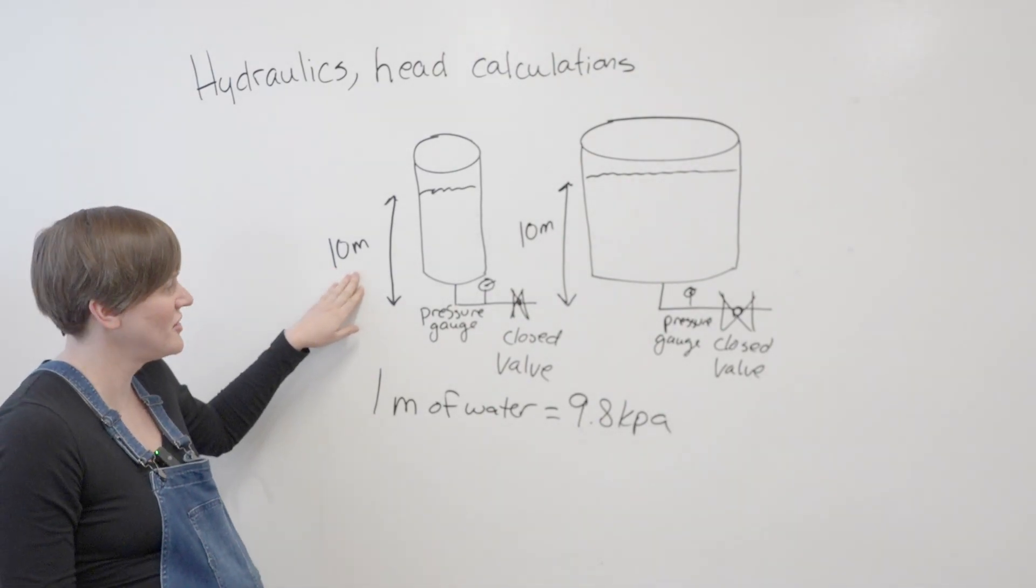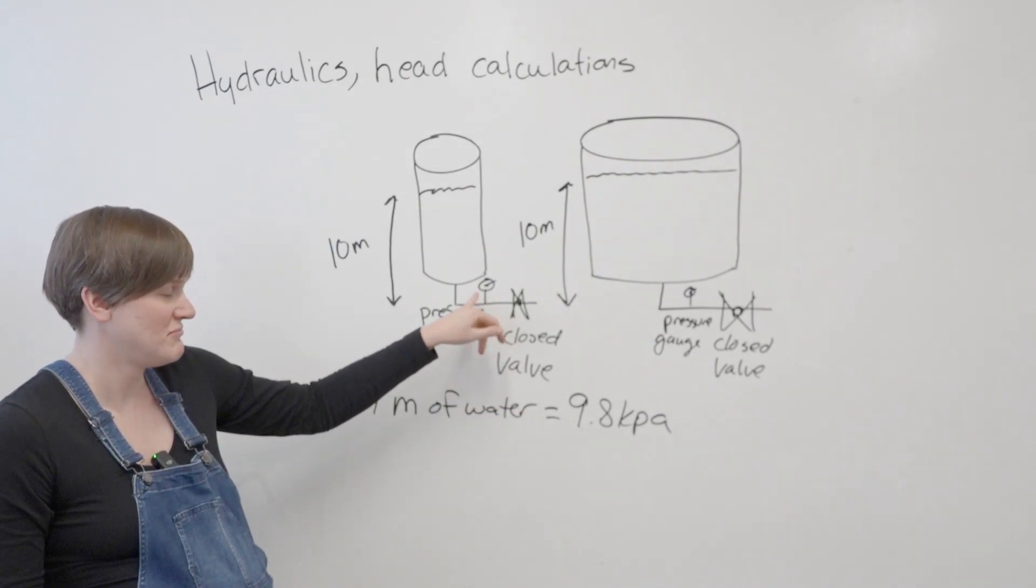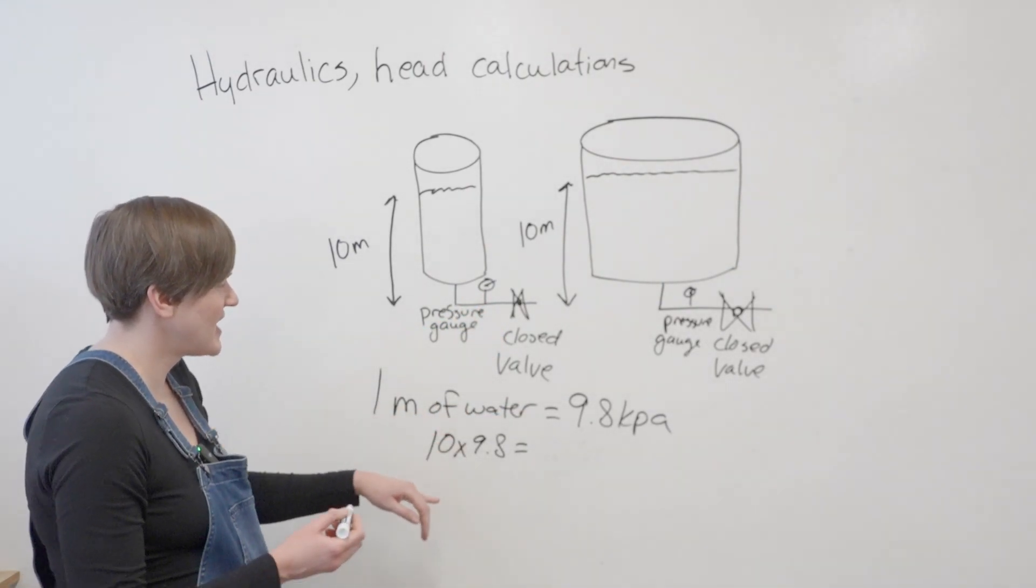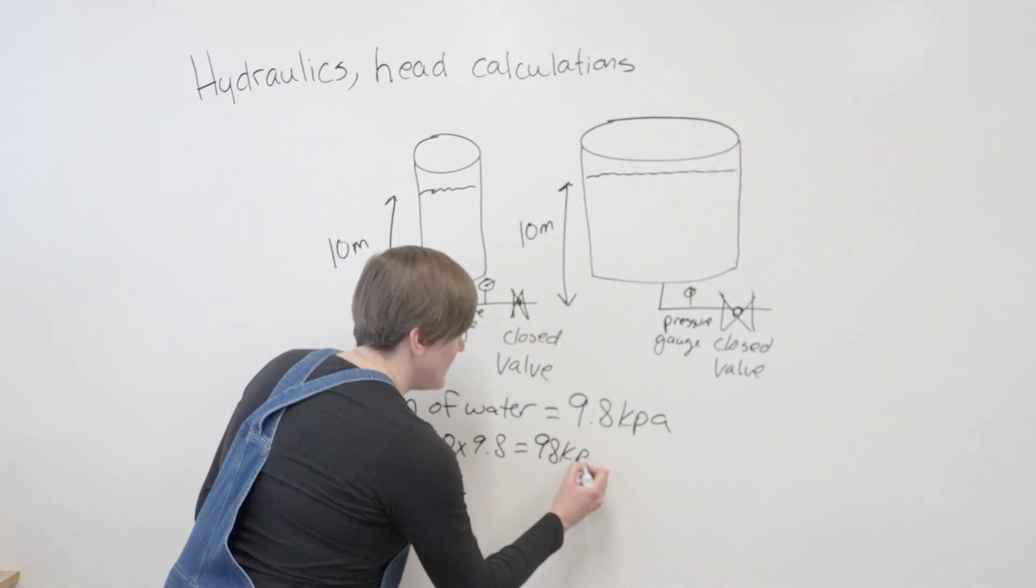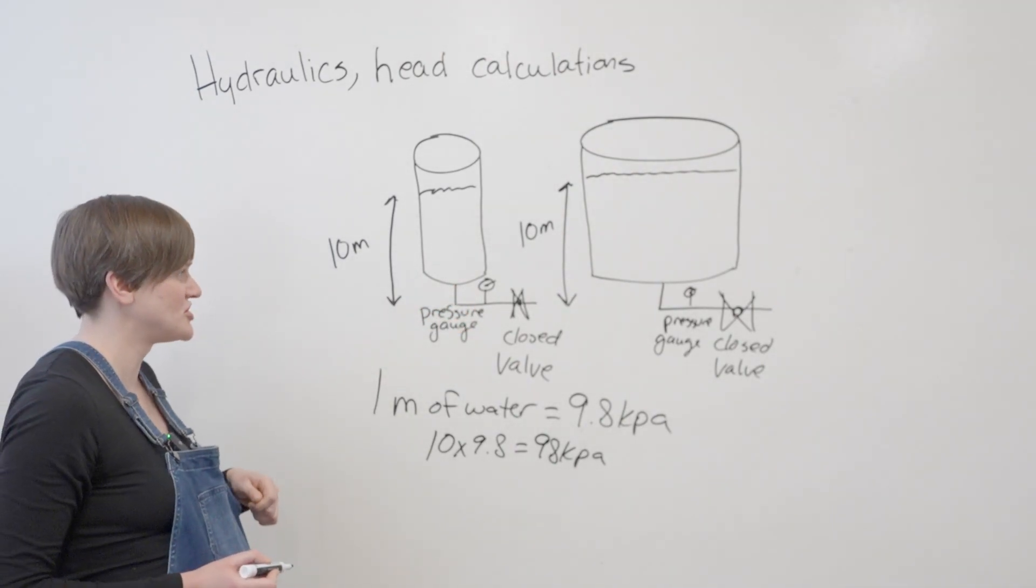So here we have 10 meters of water. So you would do 10 times 9.8 to get your gauge reading here. So 10 times 9.8 is 98 kPa. So that's what we would be reading on this pressure gauge.